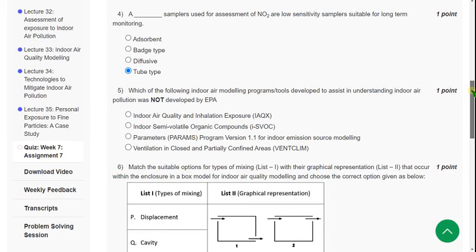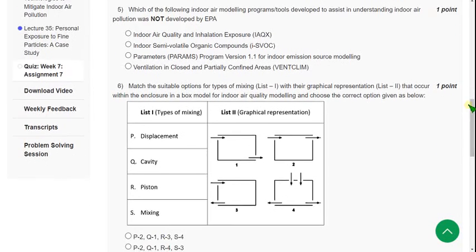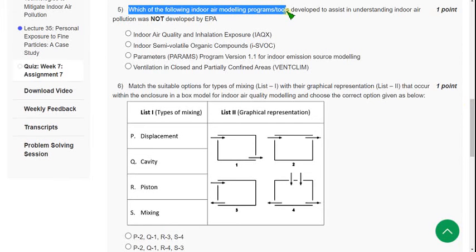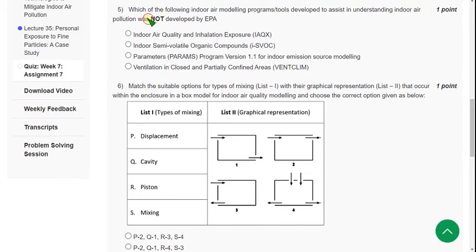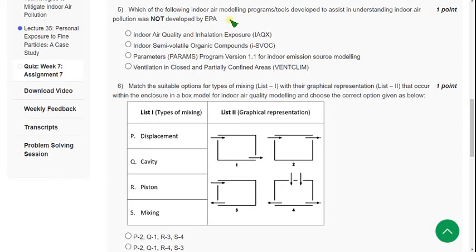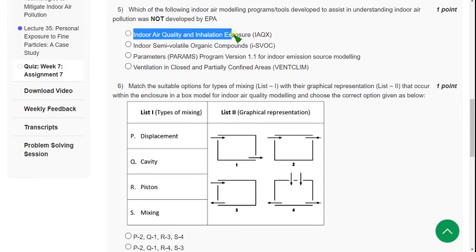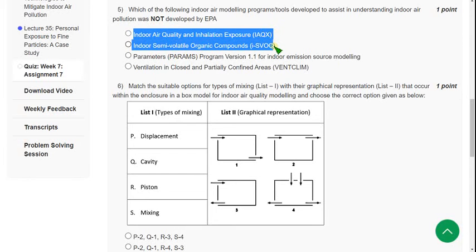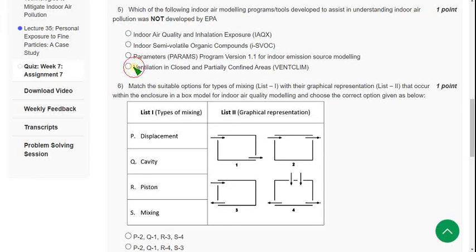Moving on to the fifth one: Which of the following indoor air modeling programs or tools developed to assist in understanding indoor air pollution was not developed by EPA? We know some tools developed by EPA. What are those tools? Indoor Air Quality and Inhalation Exposure (IAQX), ISVOC, and PARAMS. These three are developed by EPA. So the remaining one, that is Vent Clim, is not developed by EPA. So mark fourth option as correct answer for fifth question also.